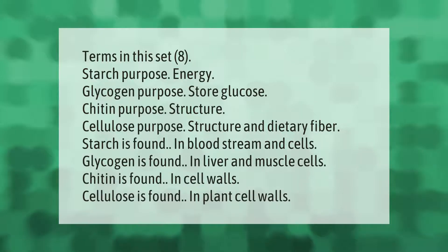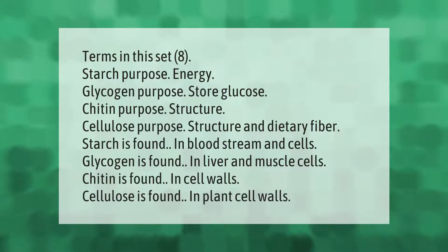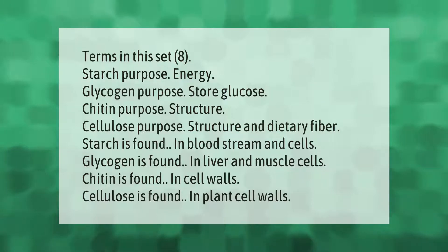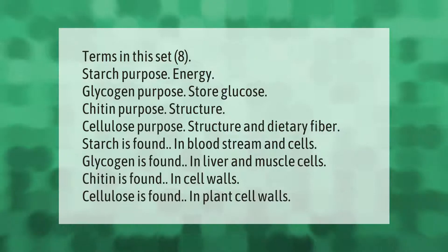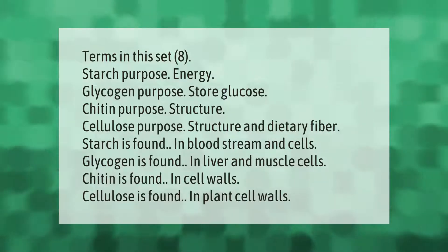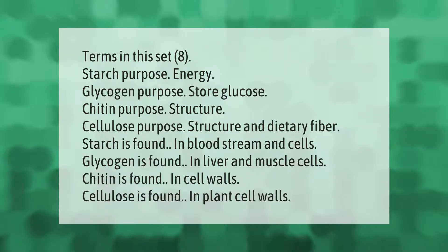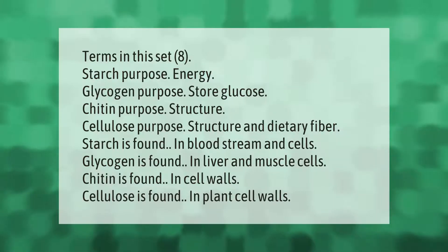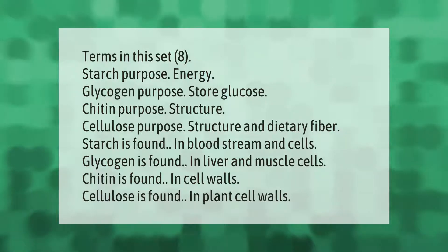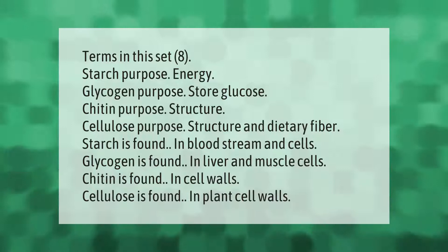Terms in this set — eight. Starch purpose: energy. Glycogen purpose: store glucose. Chitin purpose: structure. Cellulose purpose: structure and dietary fiber. Starch is found in the bloodstream and cells. Glycogen is found in liver and muscle cells. Chitin is found in cell walls. Cellulose is found in plant cell walls.